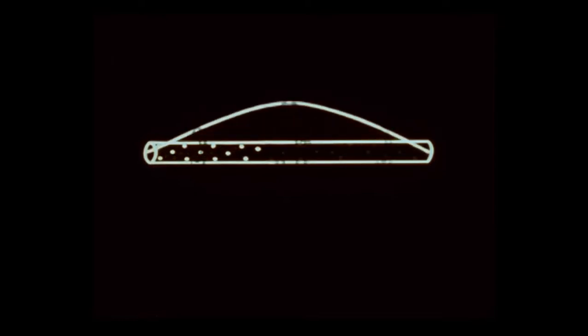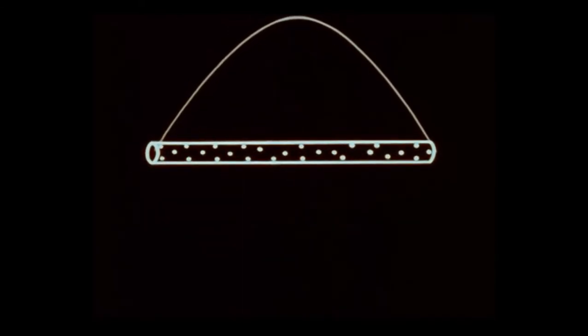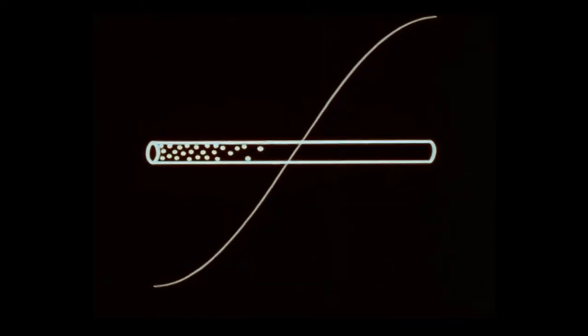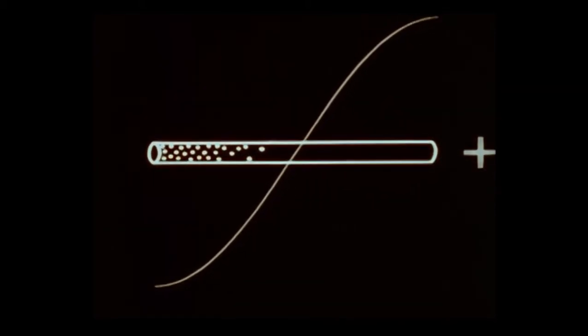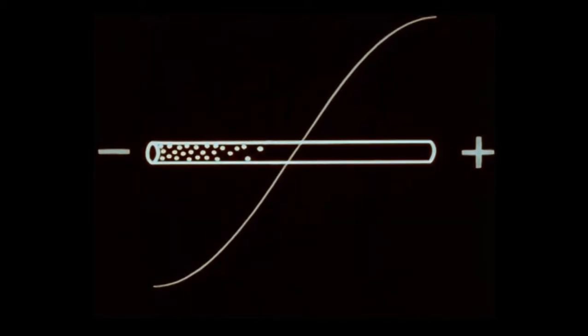The strength of this field is proportional to the amplitude of the current standing wave. This current standing wave is 90 degrees out of phase with the voltage standing wave. At this instant, the antenna has a positive voltage at this end and a negative voltage at this end. When the voltage builds in the opposite direction, the polarity reverses.